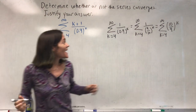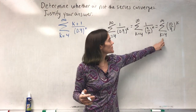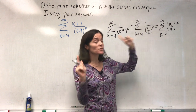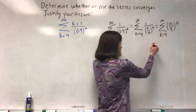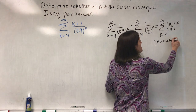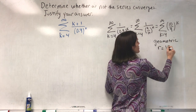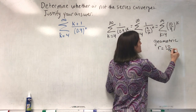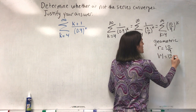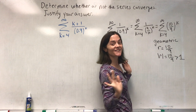This is geometric, and if you look at this, the initial term is ten over nine to the fourth. The ratio is ten over nine. The absolute value of r is ten over nine, which is bigger than one, so this series diverges.